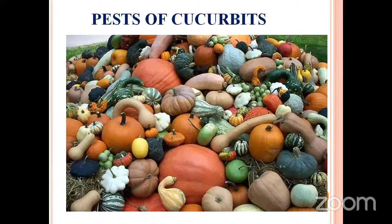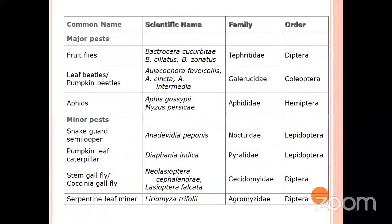Today we are discussing about the pests of cucurbits. The major pests are fruit fly, pumpkin beetle, and aphids. Under the minor pests: snake gourd semilooper, pumpkin leaf caterpillar, stem gall fly, and serpentine leaf miner.